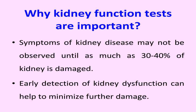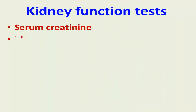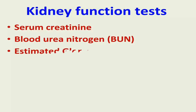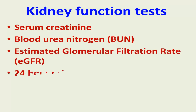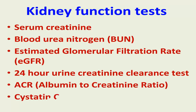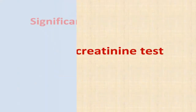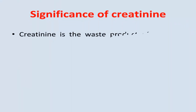Kidney function tests are as follows: serum creatinine, blood urea nitrogen (BUN), estimated glomerular filtration rate (eGFR), 24-hour urine creatinine clearance test, ACR (albumin to creatinine ratio), cystatin C. Now we look at the serum creatinine test and the significance of creatinine.